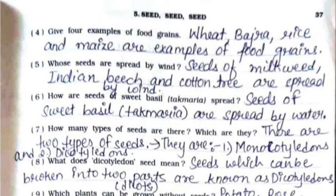Fourth: give four examples of food grains — wheat, bajra, rice, and maize are examples of food grains. Fifth: whose seeds are spread by wind? Seeds of milkweed, Indian beech, and cotton tree are spread by wind. Sixth: how are seeds of sweet basil (takmaria) spread? Seeds of sweet basil are spread by water. Seventh: how many types of seeds are there? There are two types of seeds — monocotyledons and dicotyledons.